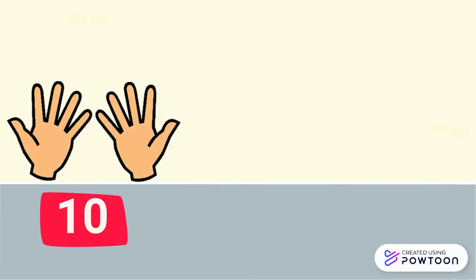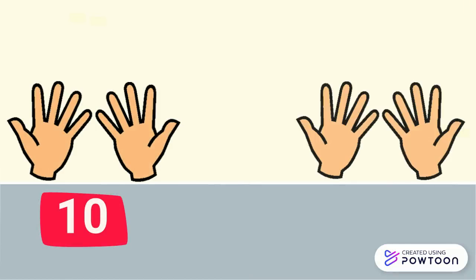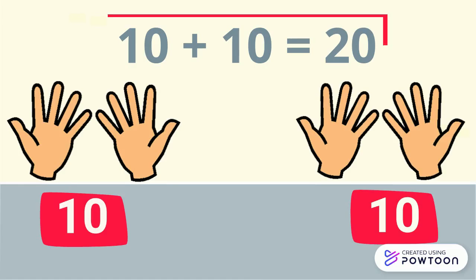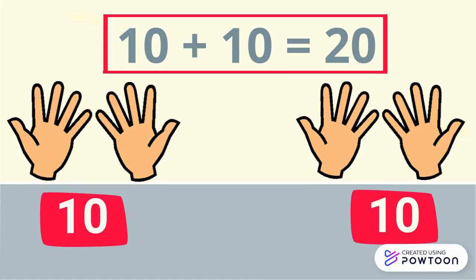In each hand there are 5 fingers. 5 and 5 gives us 10, and also we have 10 fingers, so we will have 20 fingers. So 10 plus 10 equals 20.